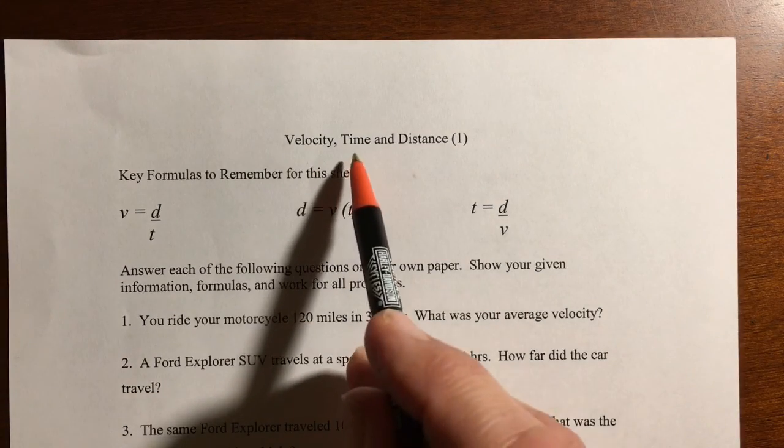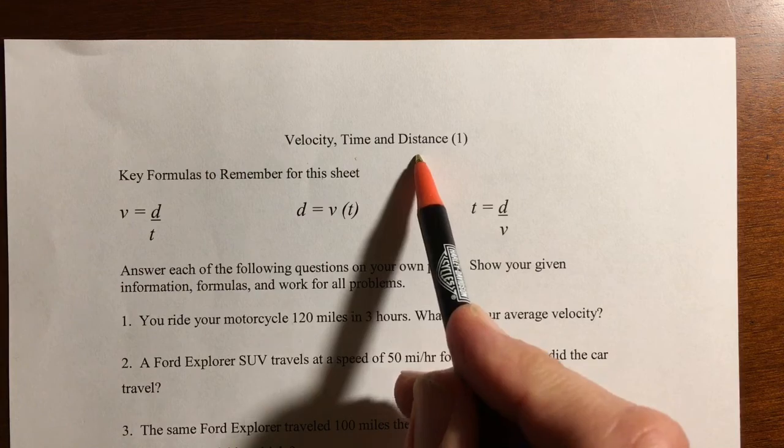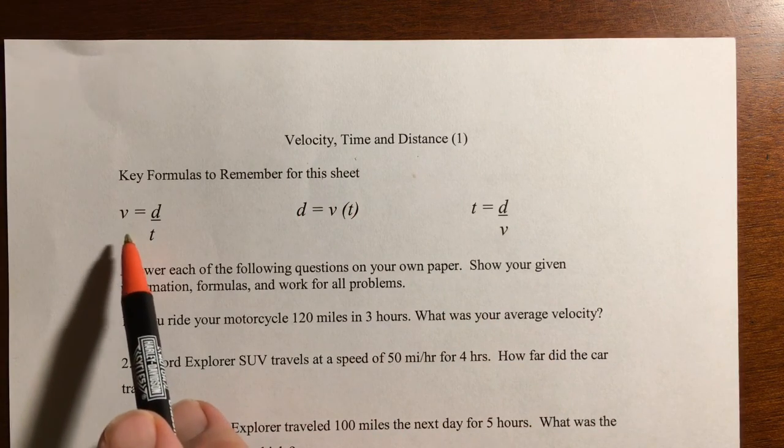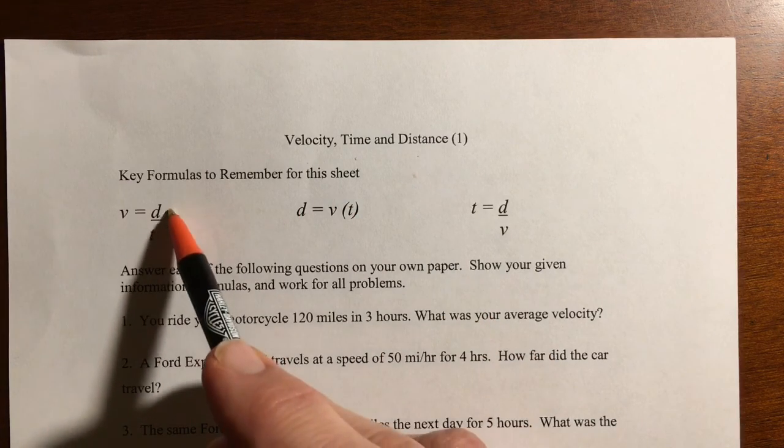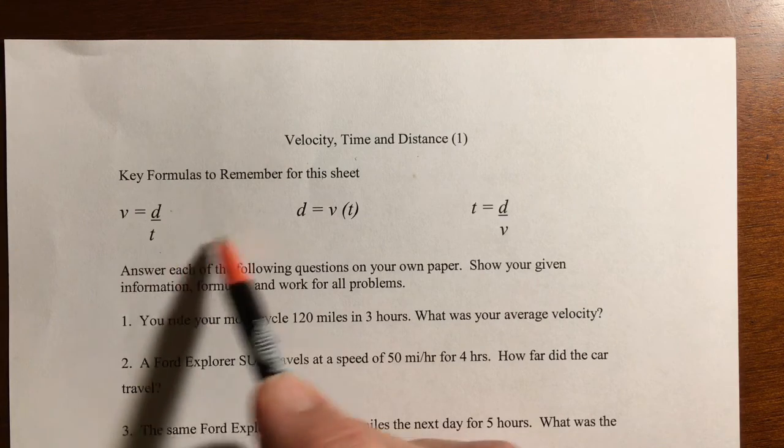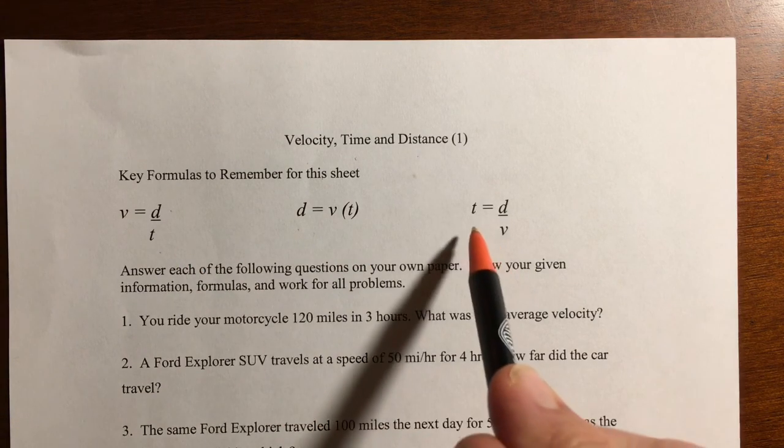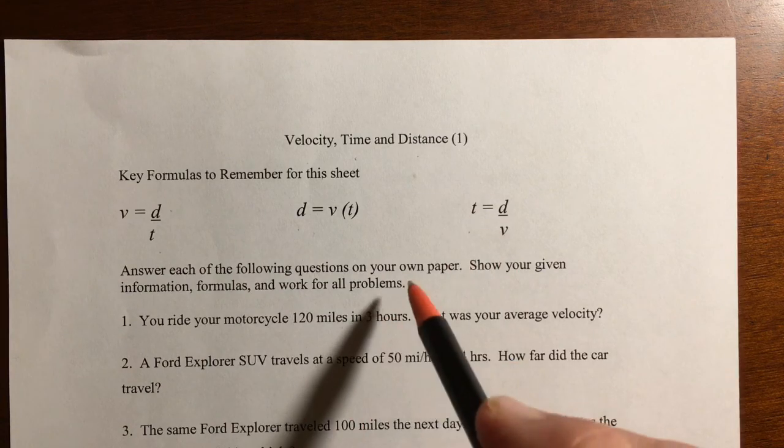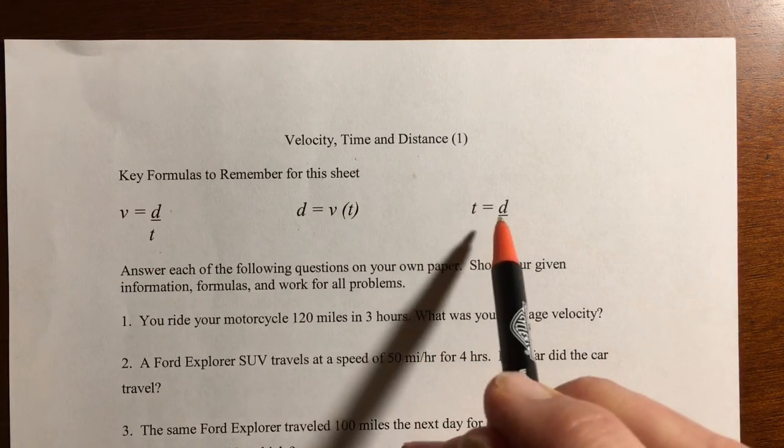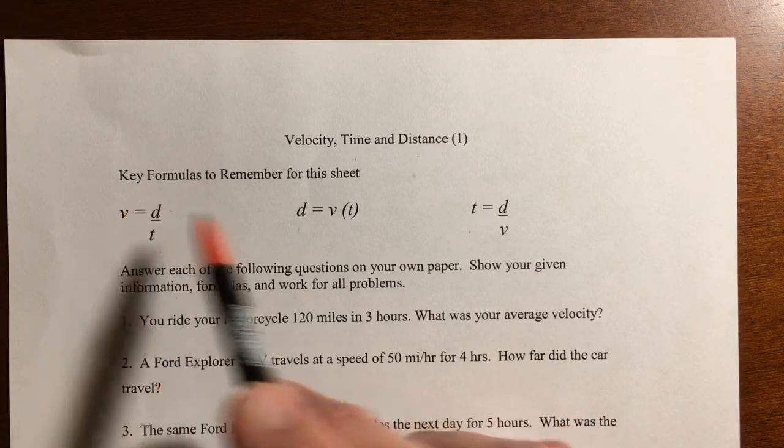Solving velocity, time, and distance. We can take the same formula, which is velocity equals distance divided by time, and rearrange it for different variables. We can find distance and we can also find time. And having two of the variables given to us, we can find the third.